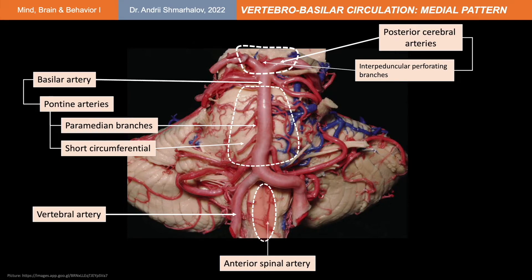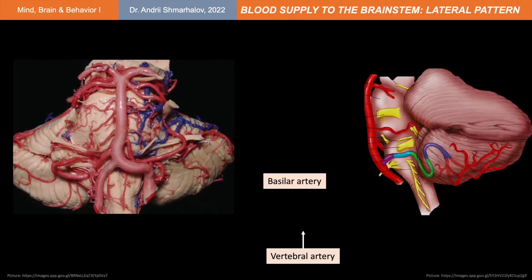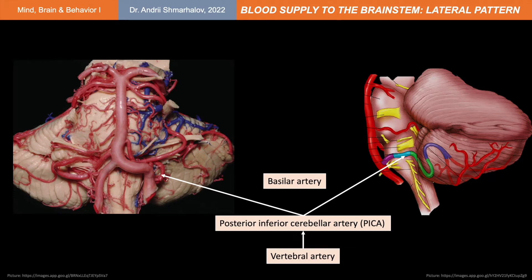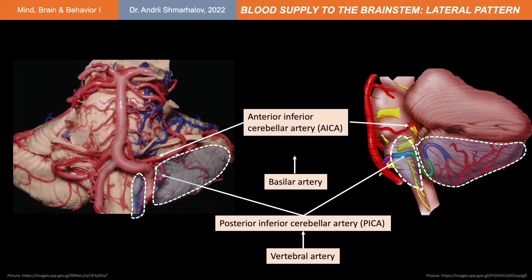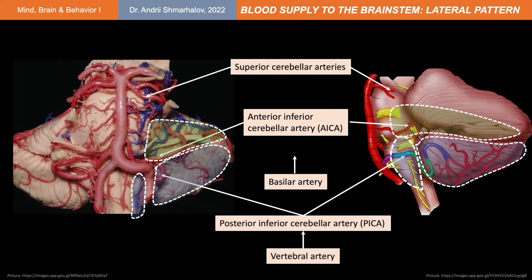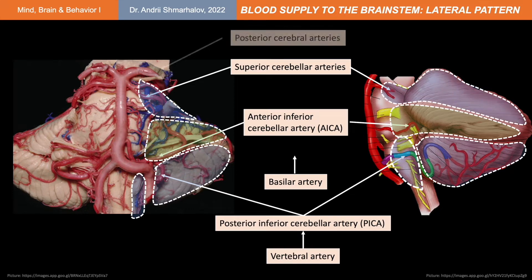Moving to the lateral perfusion: here you can see the branch of the vertebral artery called the posterior inferior cerebellar artery, PICA. This artery is responsible for the blood supply to the lateral medulla as well as the lower aspects of the cerebellum. A little higher you can see the anterior inferior cerebellar artery, the branch of the basilar artery which provides blood supply to the lateral pons and the central part of the cerebellum. Moving further up you can find the superior cerebellar arteries which loop around the rostral pons towards the superior aspects of the cerebellum. The lateral surface of the midbrain is mainly supplied by the branches of the posterior cerebral arteries.